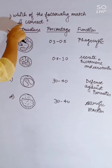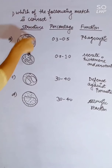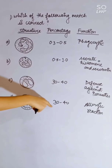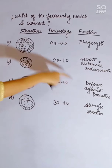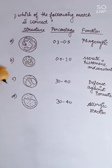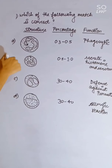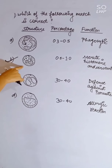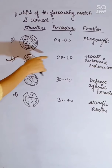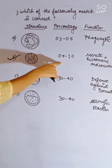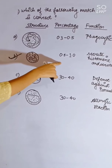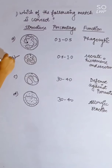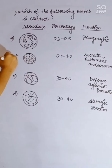Which of the following matches is correct regarding blood cell structure, percentage, and function? Correct answer is B — basophil with its correct percentage and function.